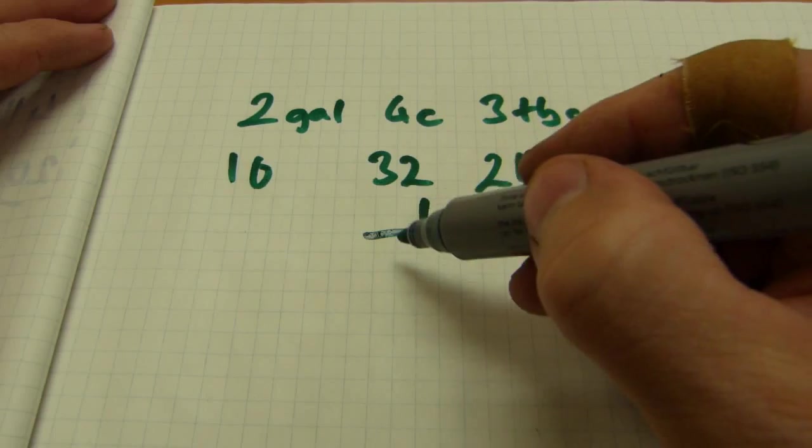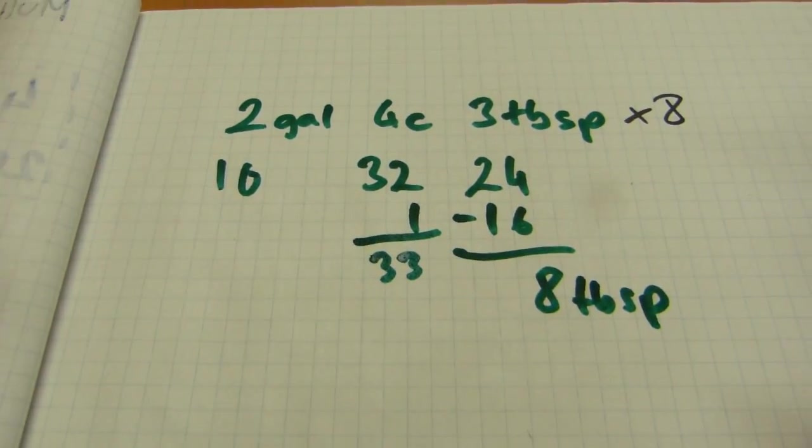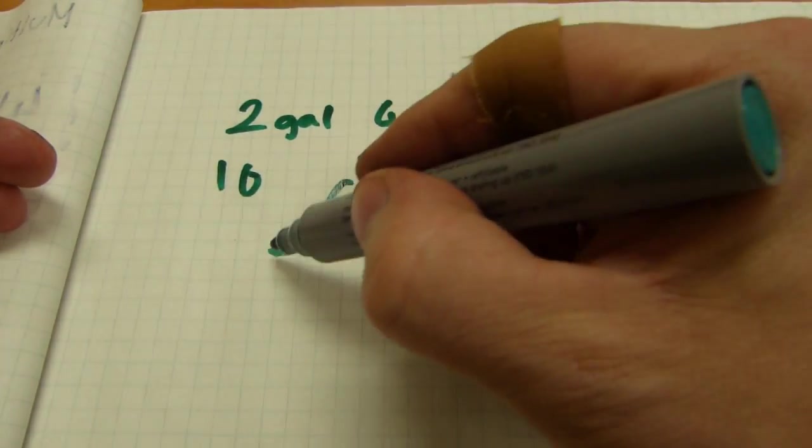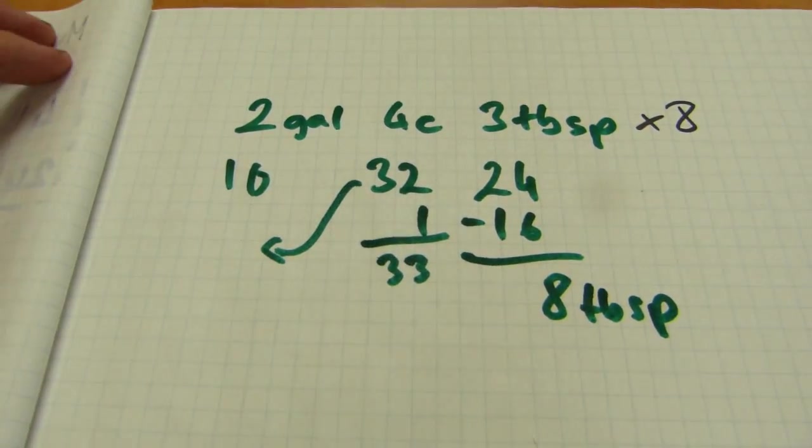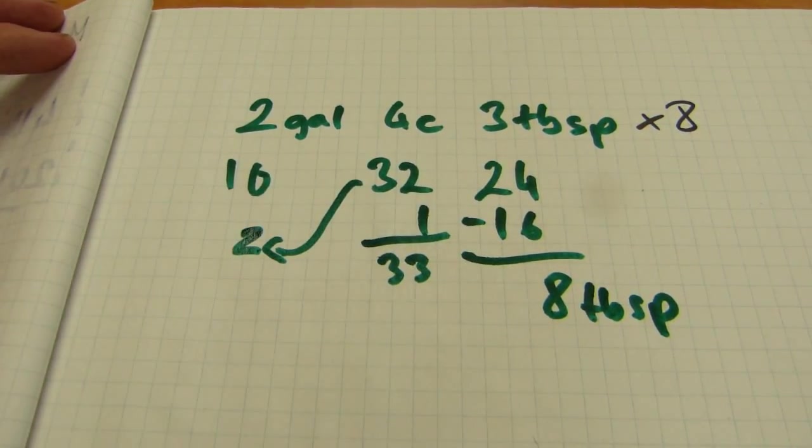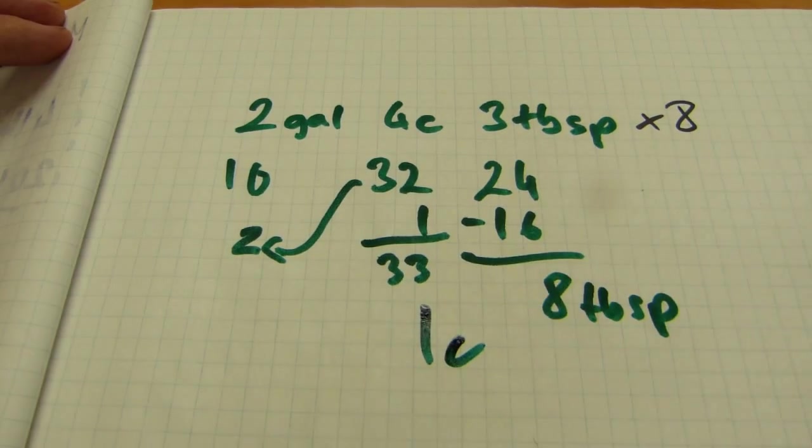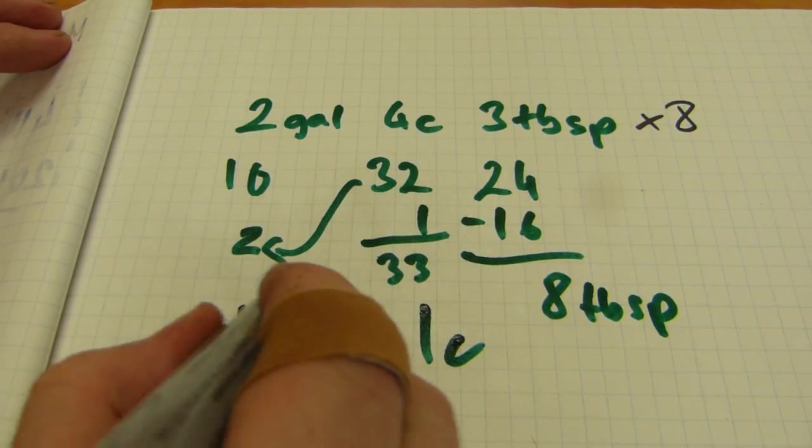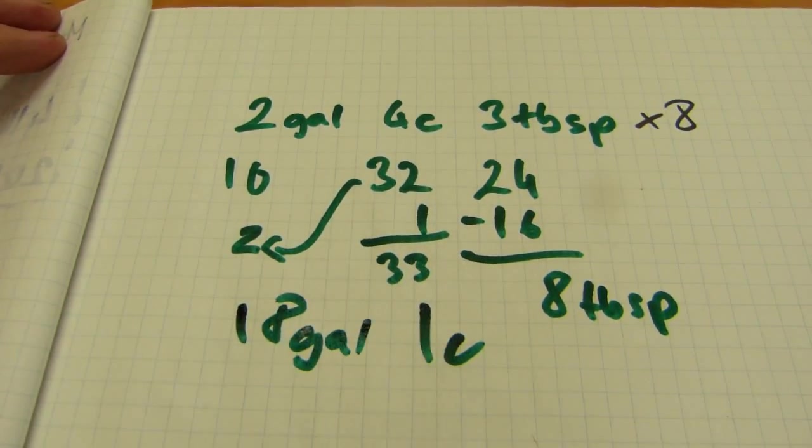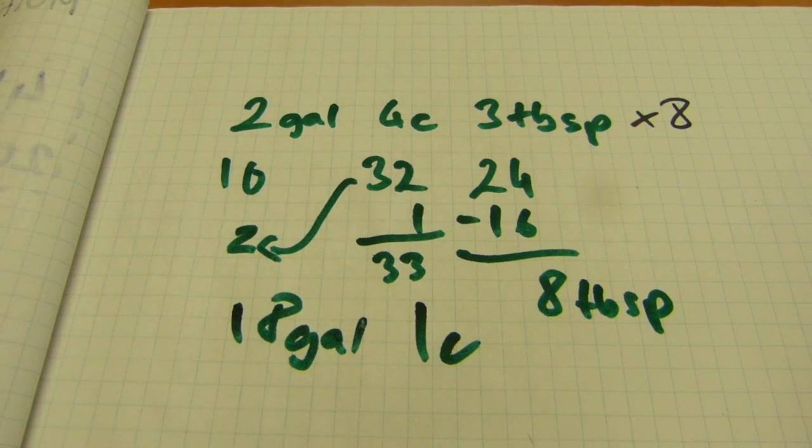This one is thirty-three cups, but out of thirty-three cups we can carry thirty-two into the gallons as two gallons. So we'll have one cup and eighteen gallons. There, that's how this one is done.